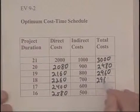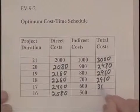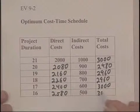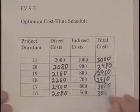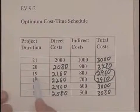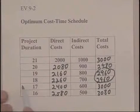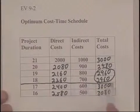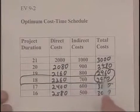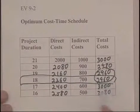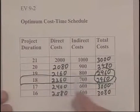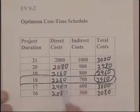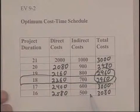The totals come out to $2,960, $3,000, and $3,080. We have a tie between period 19 and period 18, so the optimum time period would be 18 — since for the same amount of money we can knock another time unit off. We always want to take into account both direct costs and indirect costs.